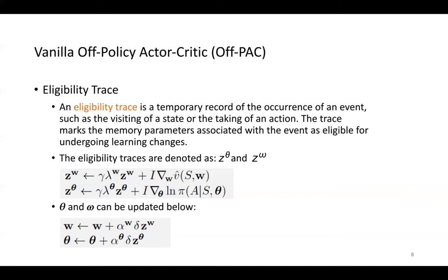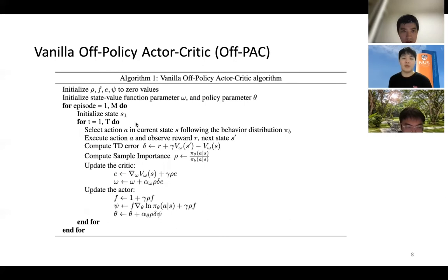Note that gamma and i here are parameters. Theta and omega can finally be updated as shown. However, the update rule here is not the final version because we need to resolve the convergence issue. So we need to introduce a parameter f for convergence and efficiency. Finally, this is what our vanilla version of the off-policy actor-critic algorithm looks like.